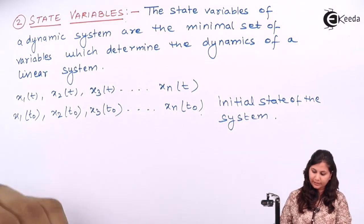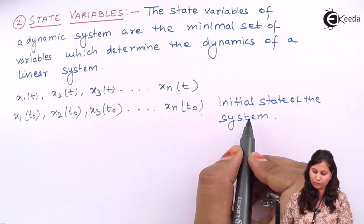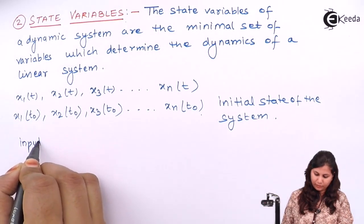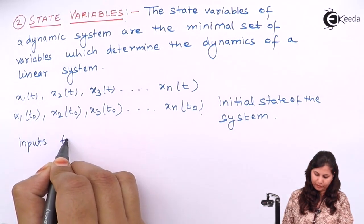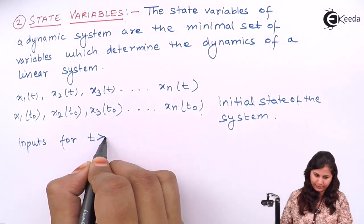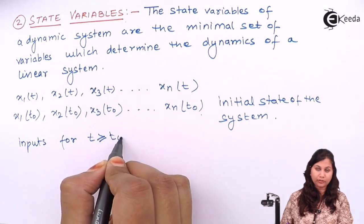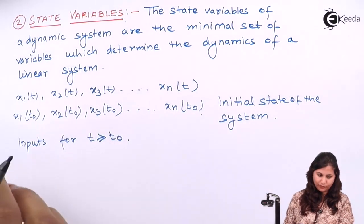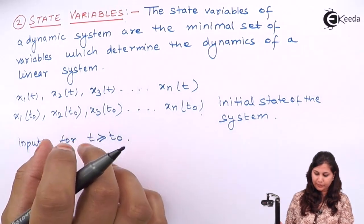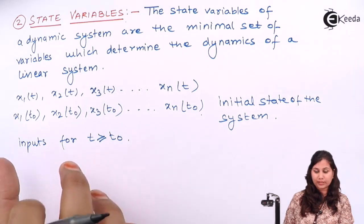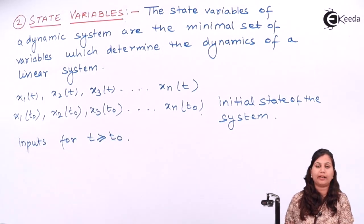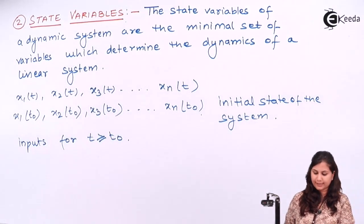Once the initial state is known and the knowledge of the inputs for T greater than or equal to T0 is known, then the set of these variables — the inputs and the state variables — will collectively define the state of the system.